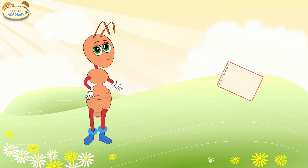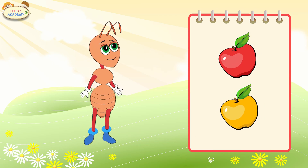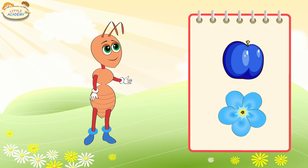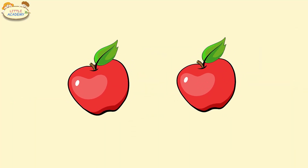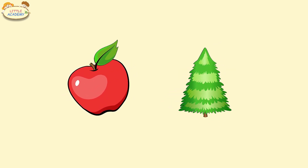Awesome. Now I will tell you how objects can be the same, similar, or different. Let's see. Here are red apples — they are the same. Here are more apples, red and yellow — they are similar. And here is an apple and a fir tree — these objects are different.